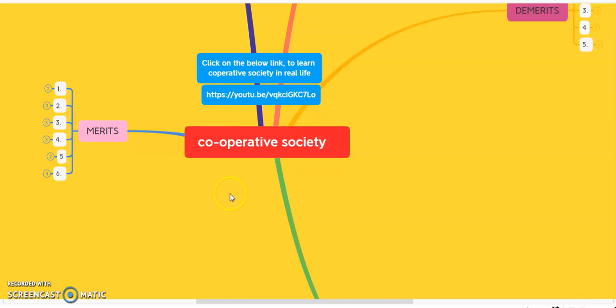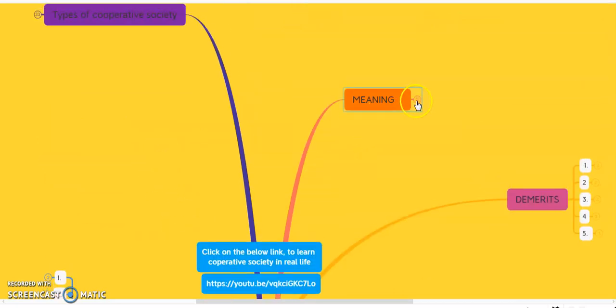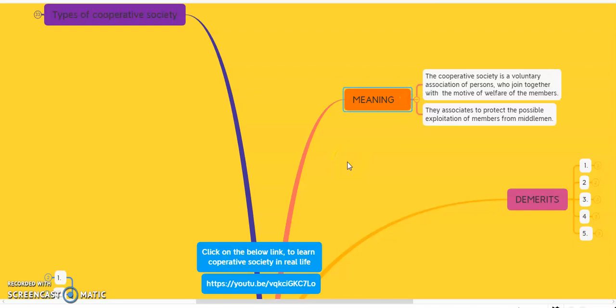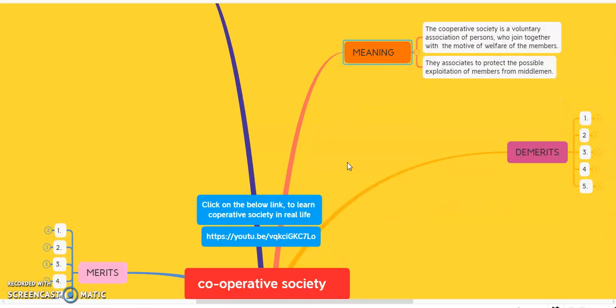First we will learn what is the meaning of cooperative society. Cooperative society is a voluntary association of persons who join together with the motive of welfare of the members. They associate to protect the possible exploitation of the members from middlemen. Cooperative society is a voluntary association of persons because nobody is forcing a person to join the cooperative society.